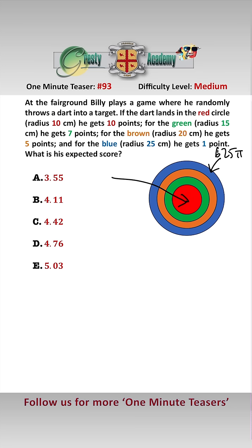The area of the red bit is pi times 10 squared which is 100 pi. The area of the green bit is pi times 15 squared.